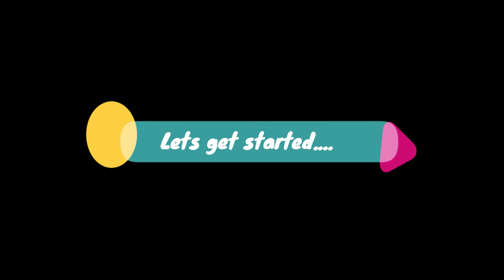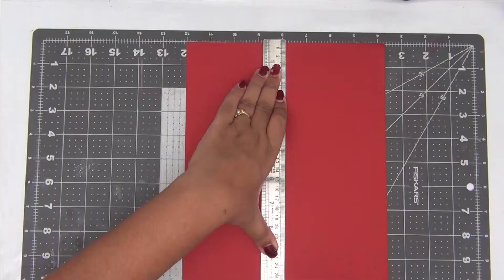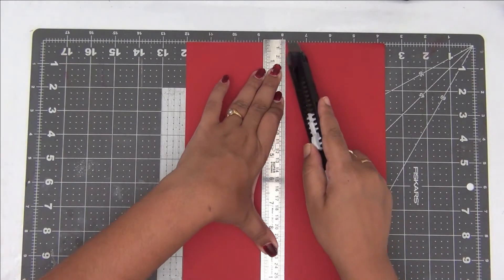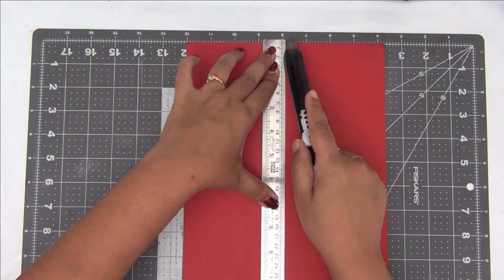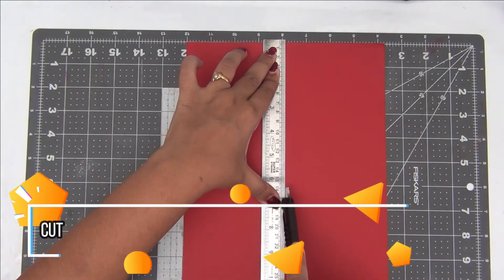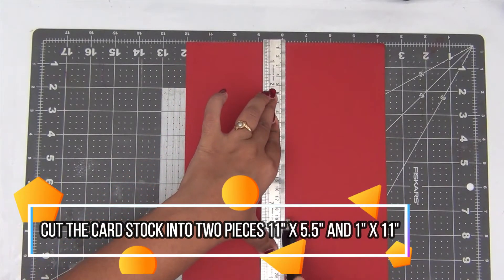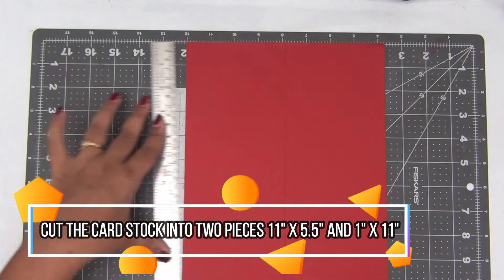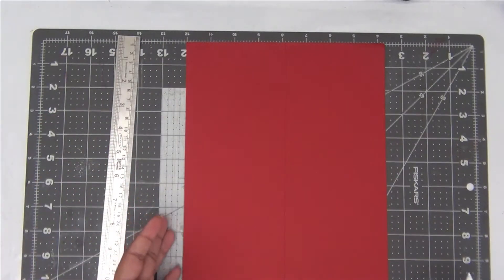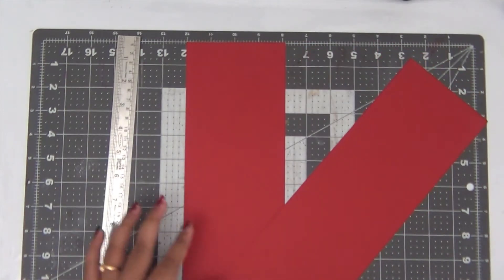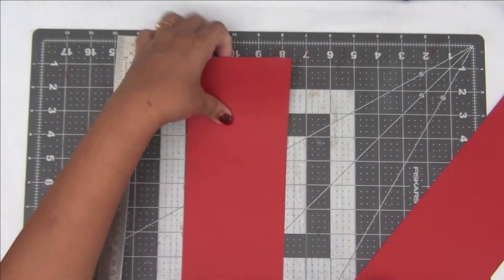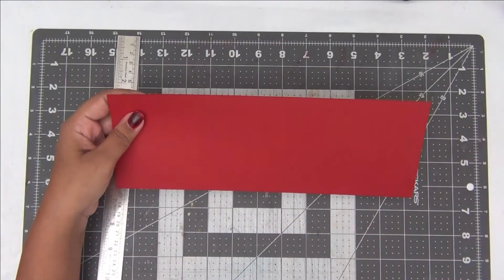So let's go ahead and know how to make this easy fun fold card. For this card, I am using an A4 sheet and I'm cutting it down into half on the short edge, so my card will be measuring 11 inches by 5.5 inches. I will also be requiring another strip that measures 1 inch by 11 inches. So this is all you need to make this beautiful fun folded card.